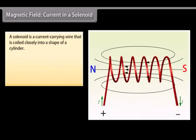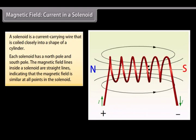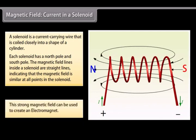Magnetic field current in a solenoid. A solenoid is a current carrying wire that is coiled closely into a shape of a cylinder with the turns as close together as possible. This is similar to a bar magnet. Each solenoid has a north pole and south pole. The magnetic field lines inside a solenoid are straight lines and indicate that the magnetic field is similar at all points in the solenoid. This strong magnetic field in the solenoid can be used to magnetize magnetic materials. This type of magnet is called an electromagnet.